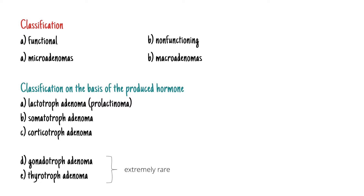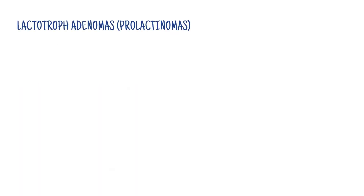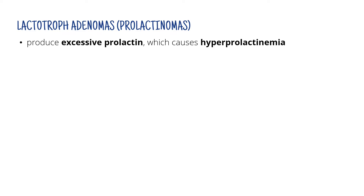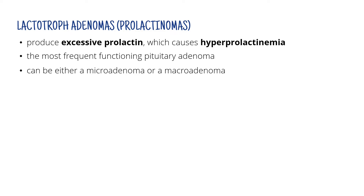Now that we've covered all the general information we needed, let's take a look at each individual type and figure out together what will happen if there's too much of the hormone it secretes in the body. We'll start with lactotroph adenomas, or prolactinomas. The way I like to do this is to first realize what the hormone normally does, and then try to figure out what could happen if there's something wrong. That way it makes more sense and it's much easier to remember.